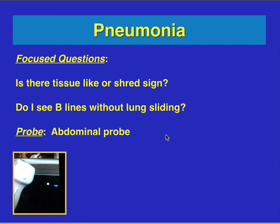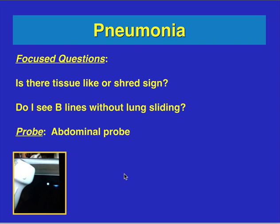To end the lecture — remember for pneumonia there are a couple of focus questions: is there a tissue-like sign or shred sign, and do I see B-lines without lung sliding? There are some times where you find B-lines on one side of the chest, either left or right, and they do not have lung sliding. In the appropriate clinical context, this may be a sign of early pneumonia or early aspiration. If it's bilateral, that would suggest more of a process like ARDS or pulmonary fibrosis. But when you have unilateral B-lines that do not have lung sliding, that indicates possible pneumonia.